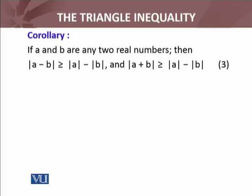There is a small result which we call corollary. If a and b are any two real numbers, then we have these properties: |a - b| is greater than or equal to |a| - |b|. And furthermore, |a + b| will be greater than or equal to |a| - |b|. Here is slight change. Here minus, here plus. Here plus in the third inequality.